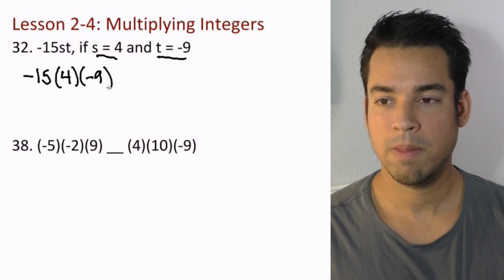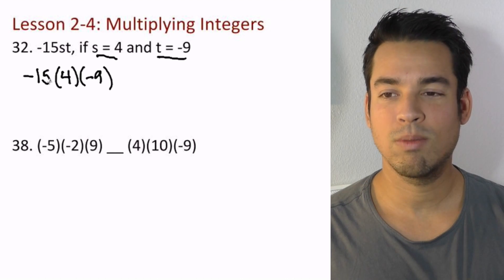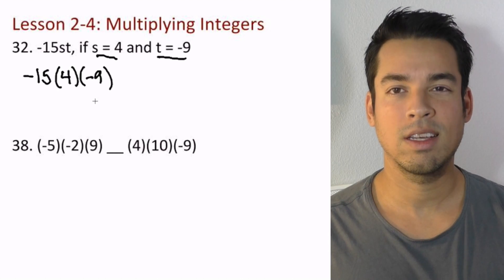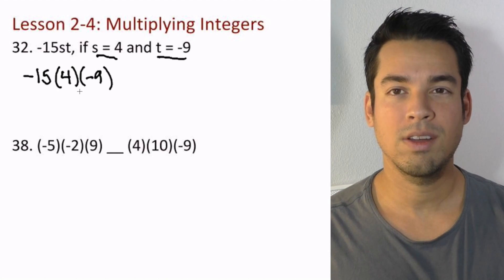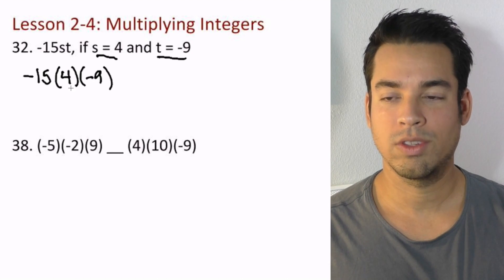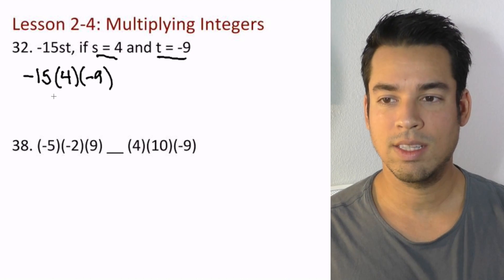How many negative numbers do we have? We have 2: negative 15 and negative 9. Therefore, this answer is going to be positive. Now let's multiply them all out. We could do it any way; I'm going to do it in the order given. 4 times 15 is 60, and we still got this 9 here.